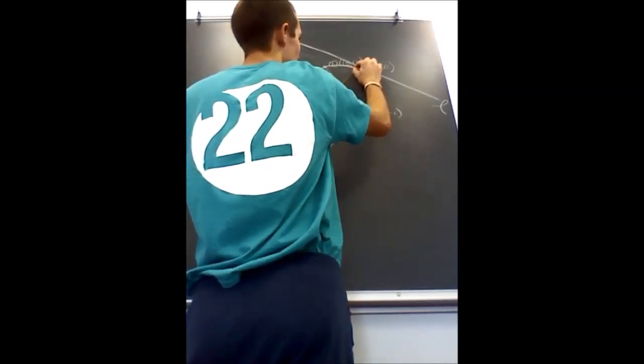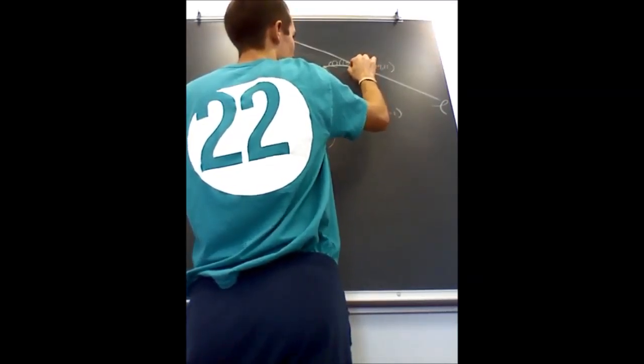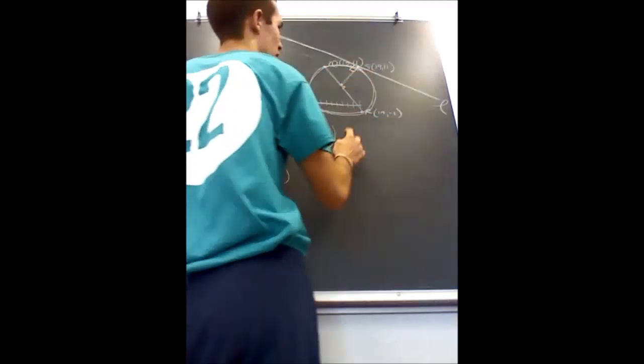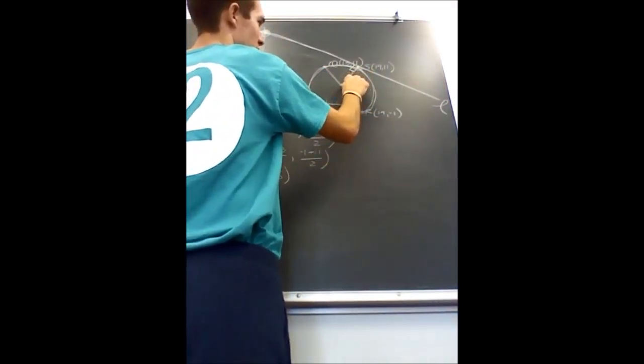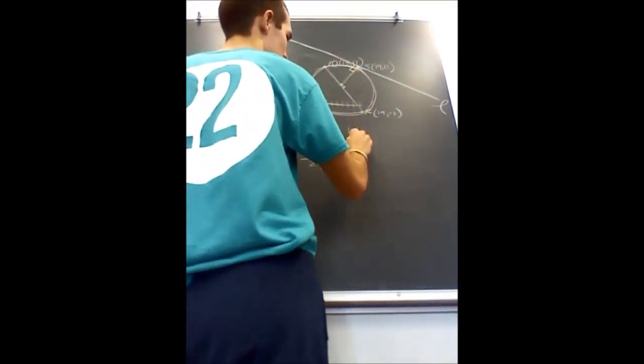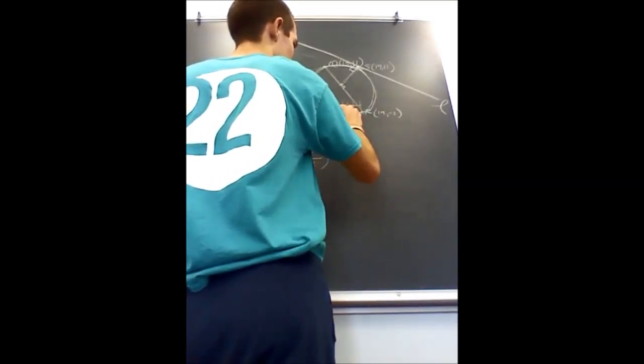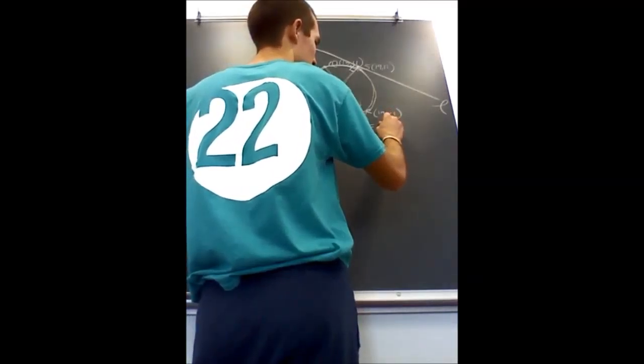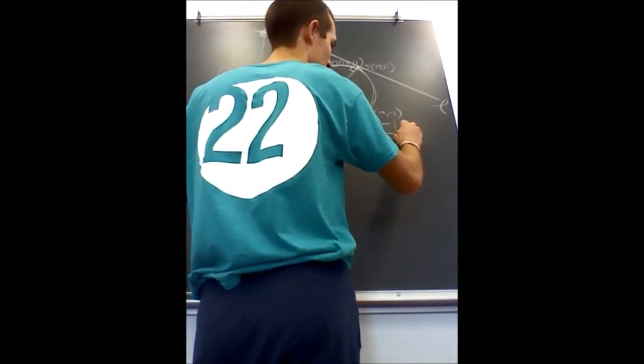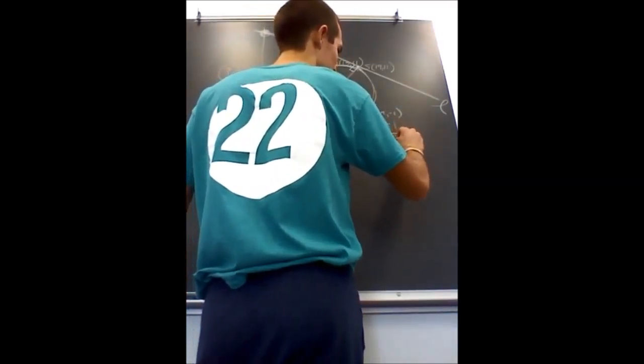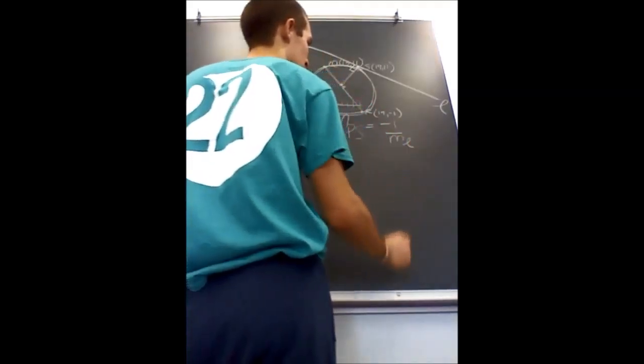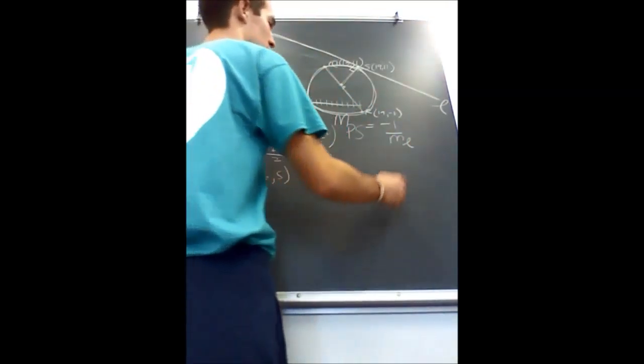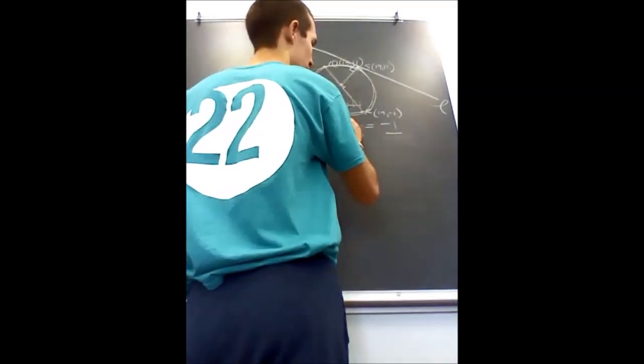So that means the slope of line PS would be equal to the opposite reciprocal of the slope of L. Or, the slope of L would be equal to the opposite reciprocal of the slope of PS.